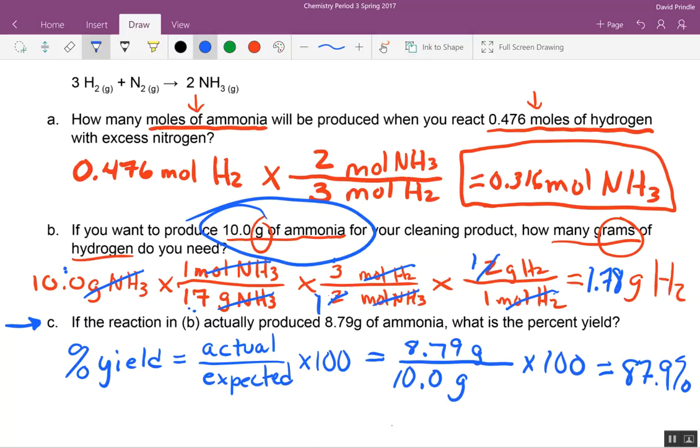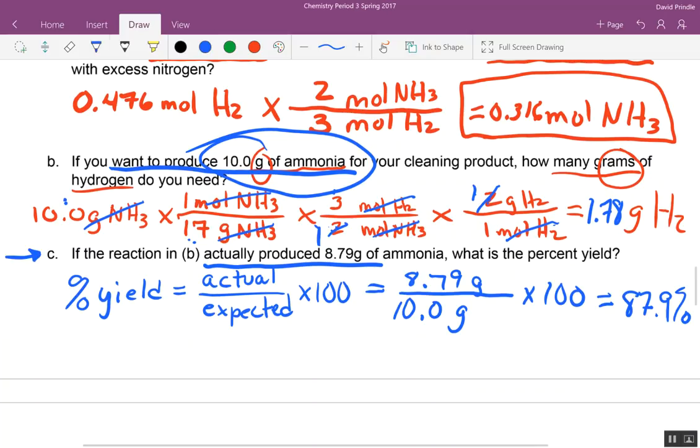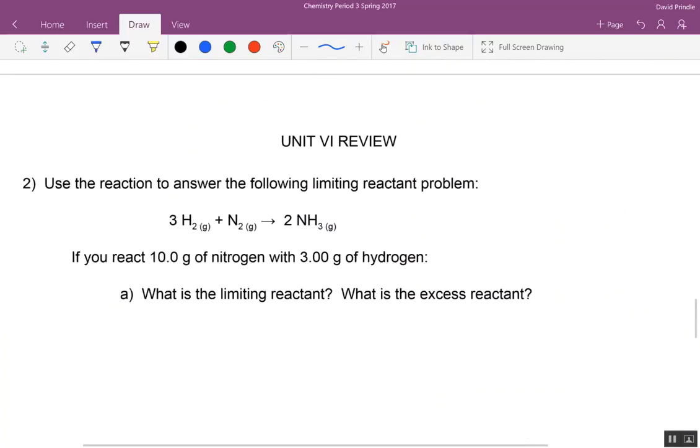All right. This looked like you had to do a bunch of extra stuff but they'd already done most of it for you. So look for keywords. Actually produced, that will give you your top number. Wanted to produce, that's your expected. Now tomorrow, here, number two, limiting reactant.